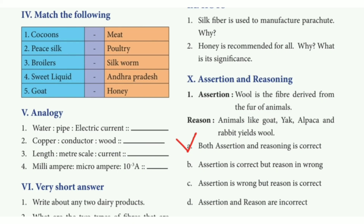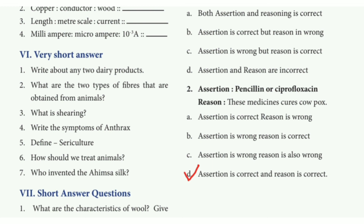Assertion and reasoning. First question answer: option A — both assertion and reasoning are correct. Second answer: option D — assertion is correct and reason is incorrect. This lesson's answers are now complete. This video will be useful.